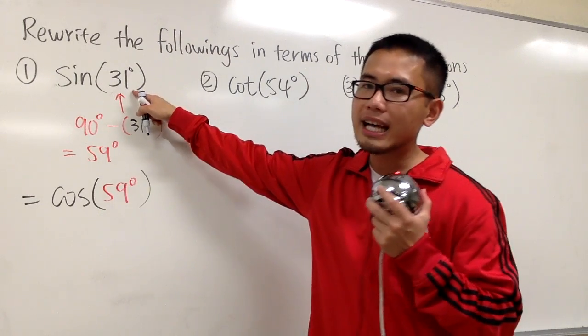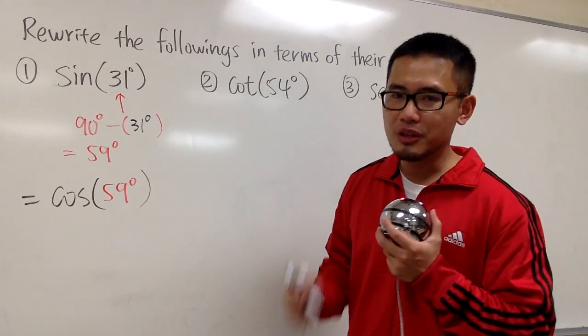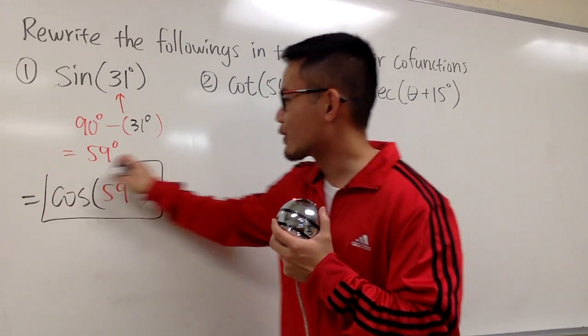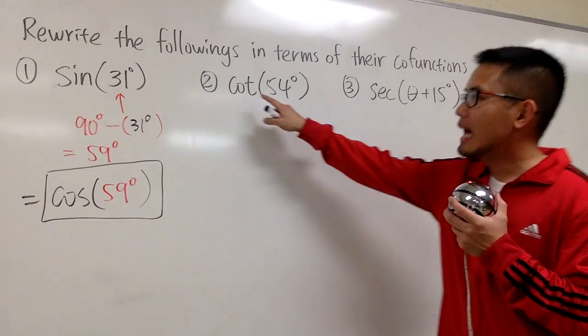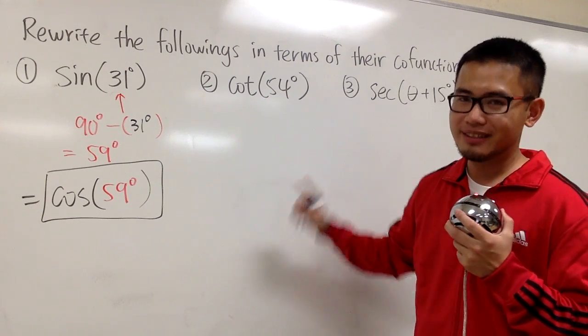When these two angles add up to be 90 degrees, sine and cosine will be equal to each other. So that's the beauty of co-functions. And for the second one, we have cotangent. So its co-function will be tangent.